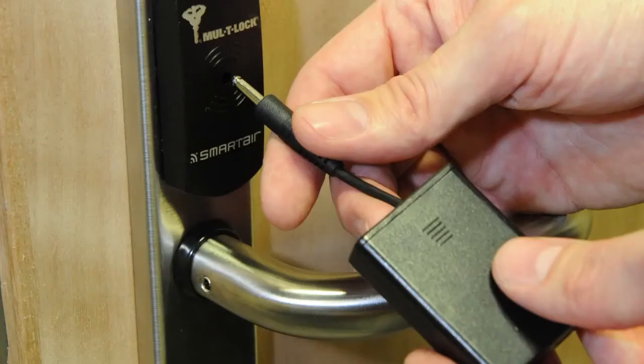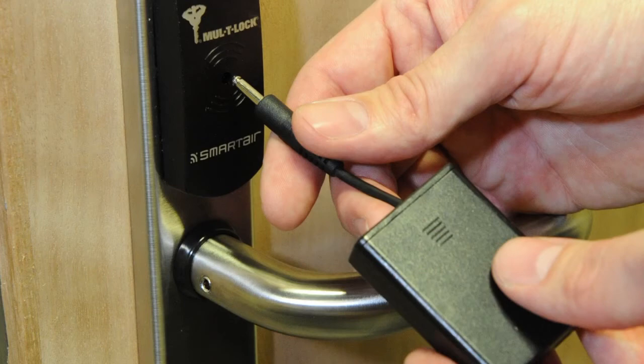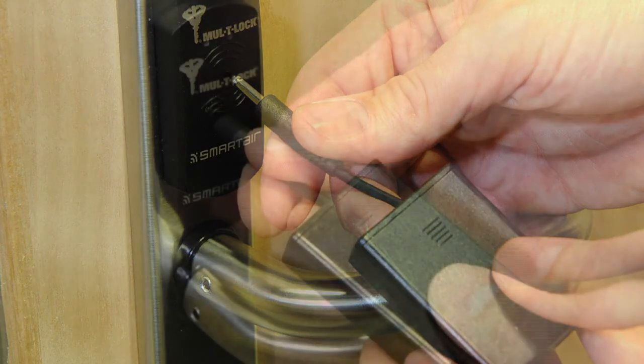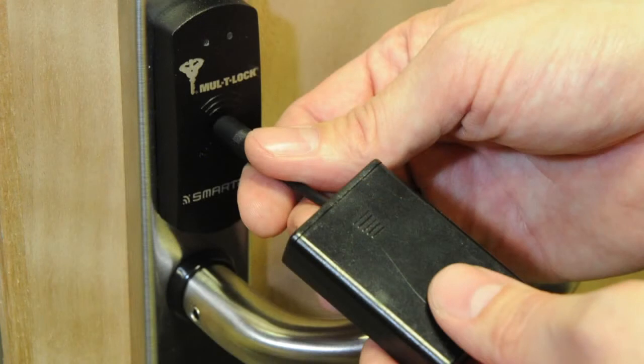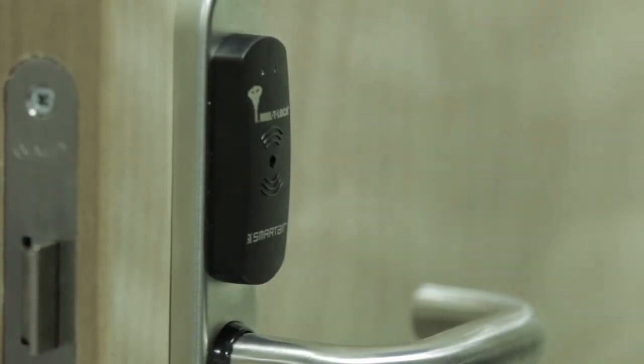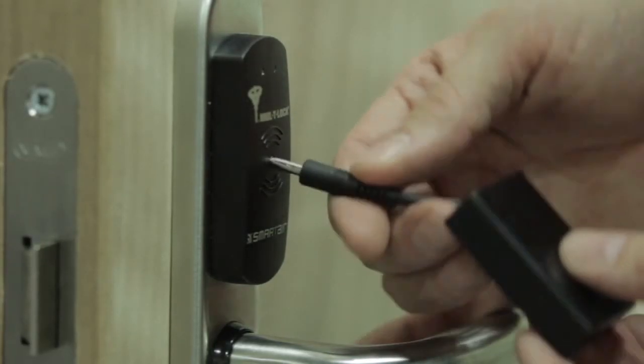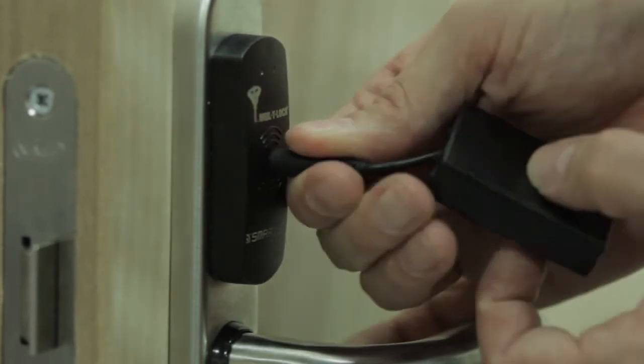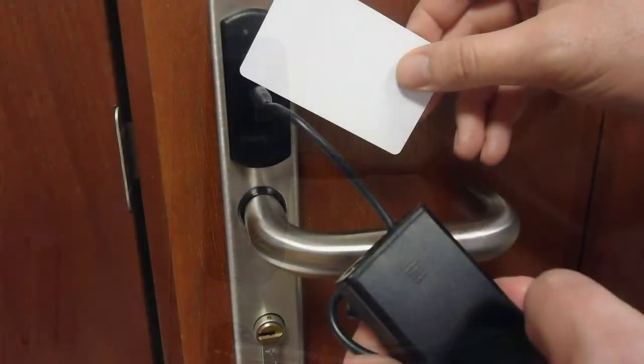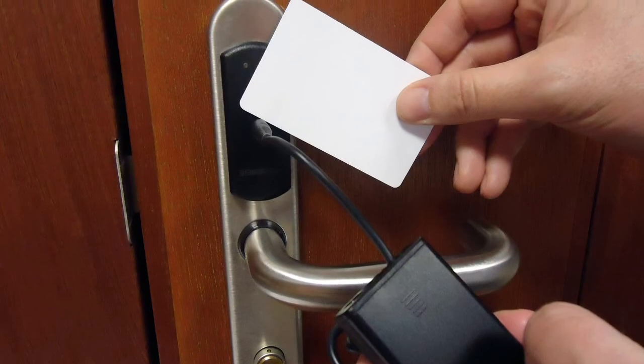In the event the batteries are allowed to become completely discharged, the unit will fail to operate. To gain access to the inside escutcheon to replace the batteries, you will need to use the emergency opening unit. Insert the connector into the hole in the center of the reader and present a valid credential whilst holding the unit in place. This will allow you to operate the handle and gain access to the rear of the unit.